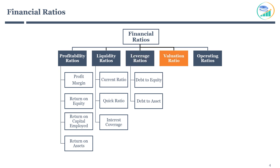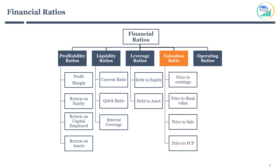The next important category is valuation. A valuation ratio determines whether a stock is cheap or expensive with respect to company profitability. There are four key valuation ratios: price to earnings, price to book value, price to sales, and price to free cash flow. Along with these, discounted cash flow — also known as DCF analysis — is a valuation method used to estimate the value of a stock based on the company's expected future cash flows. This is a very important concept that will be discussed during stock valuation.